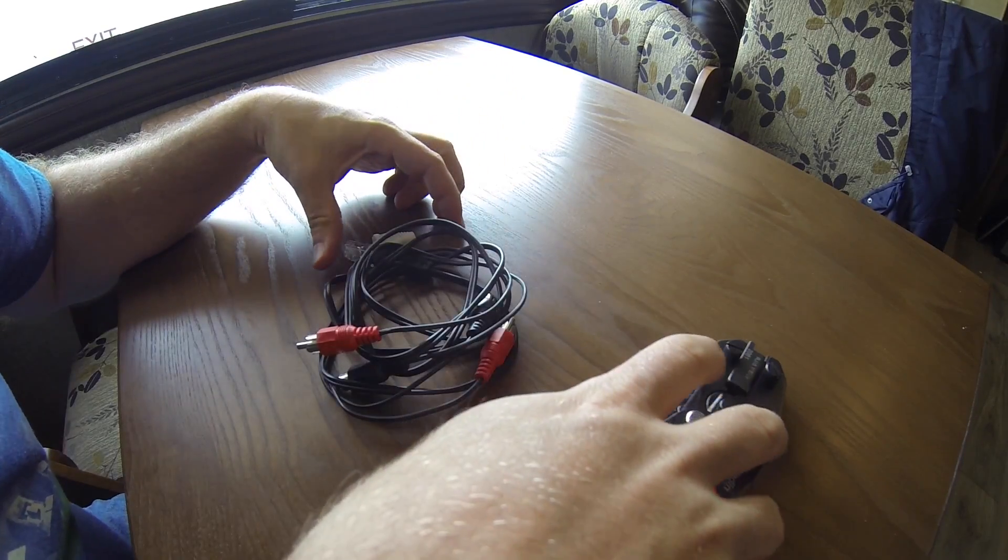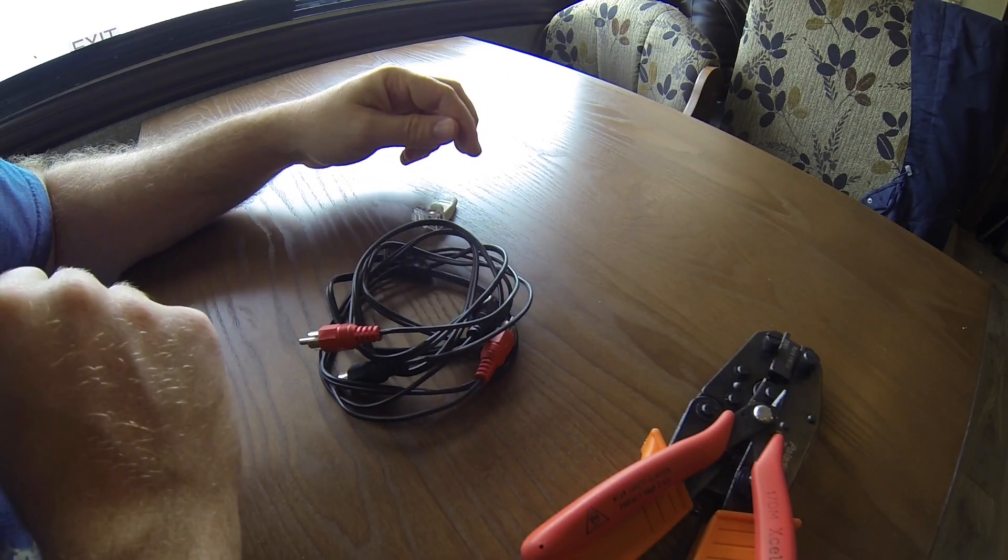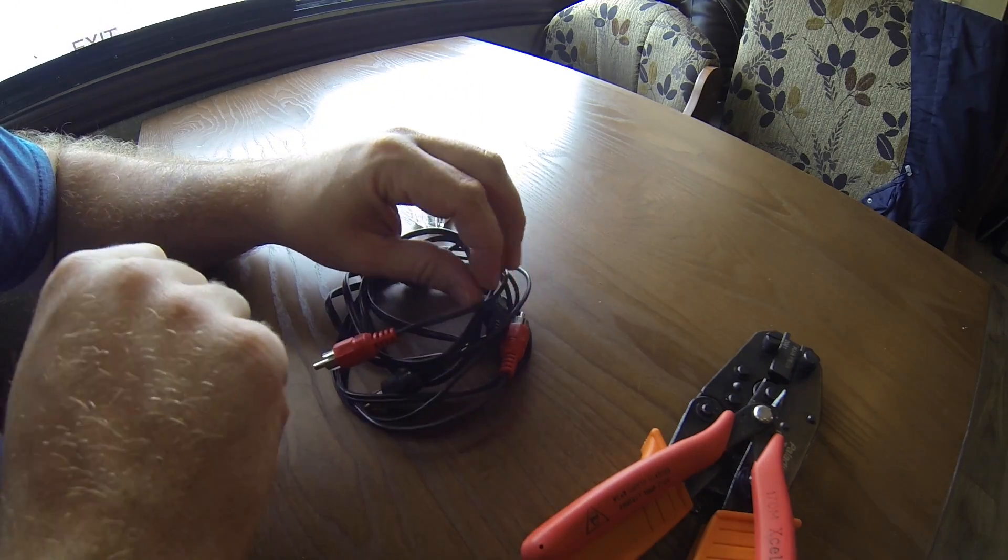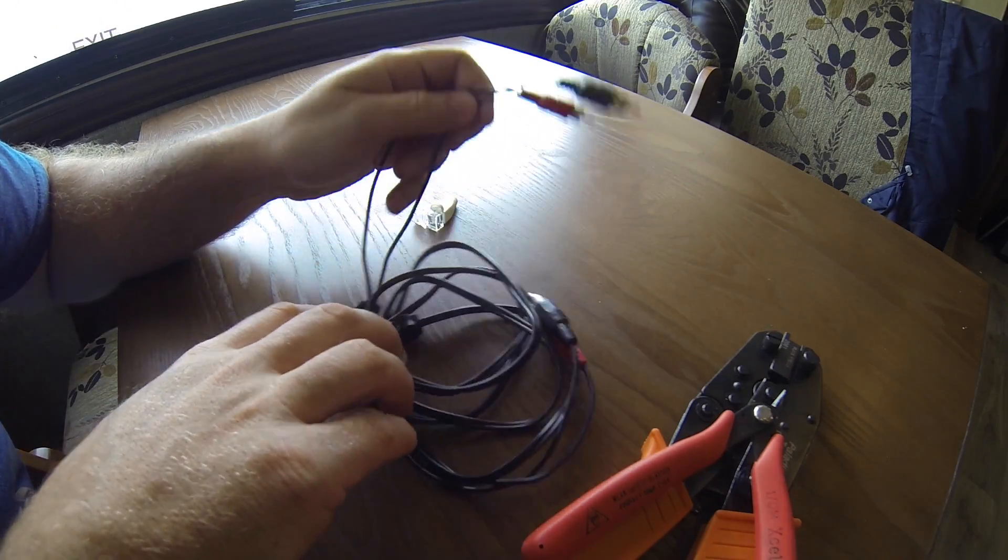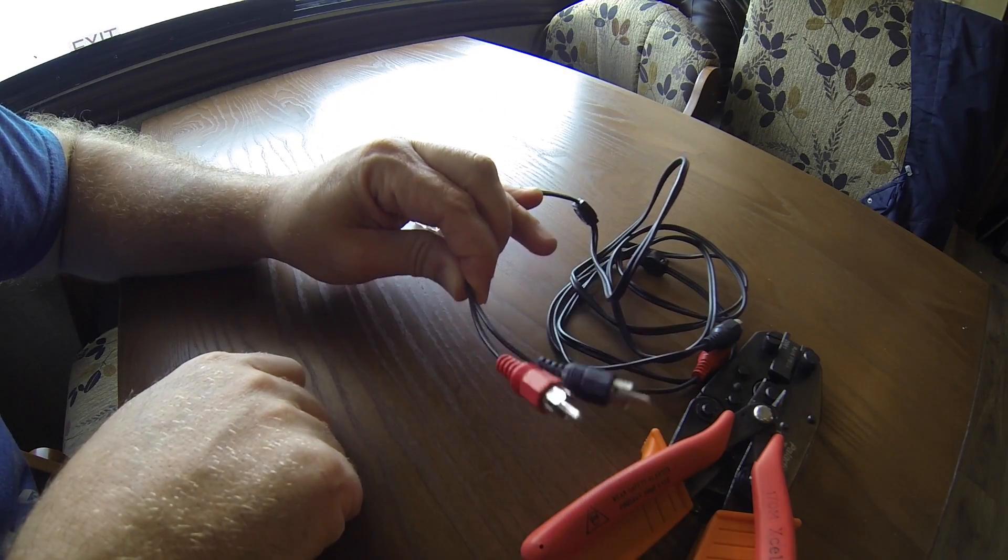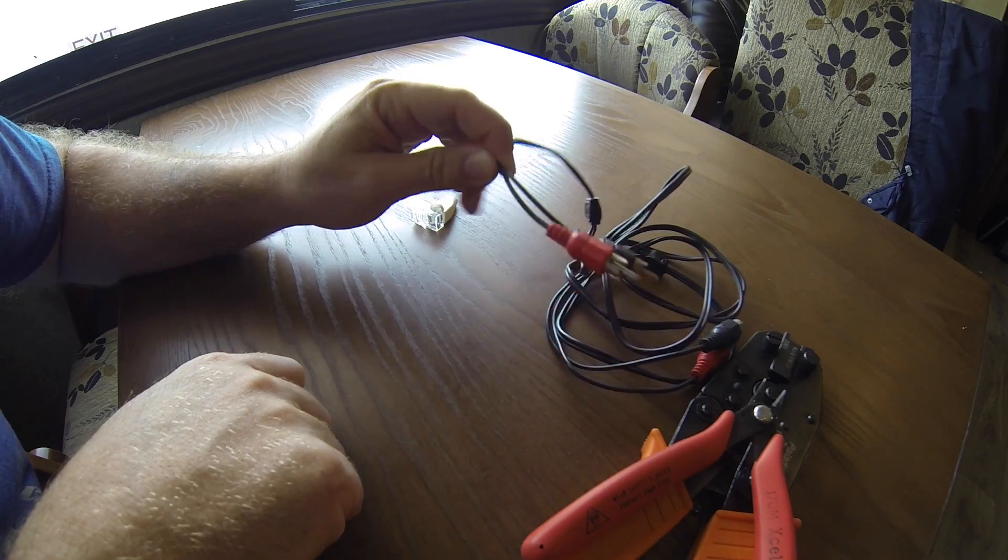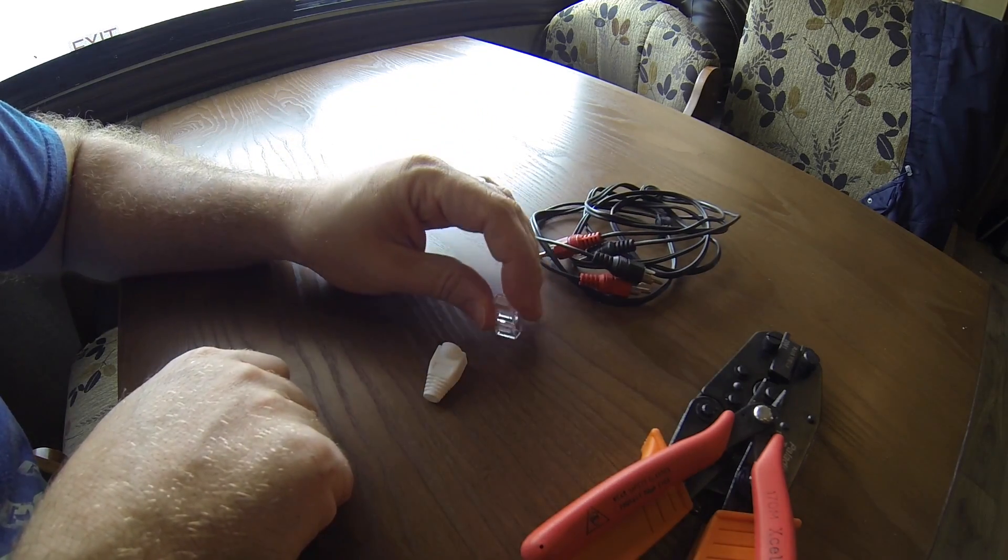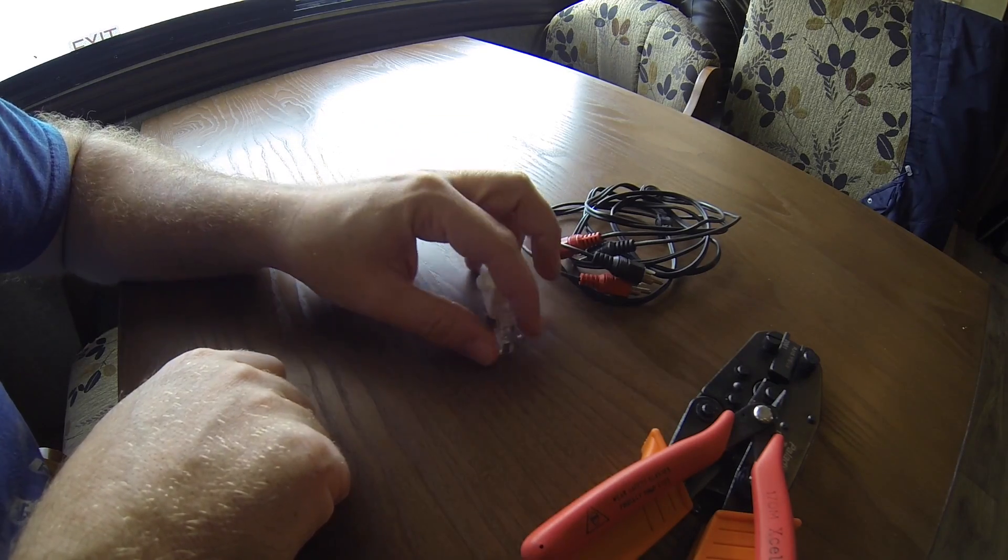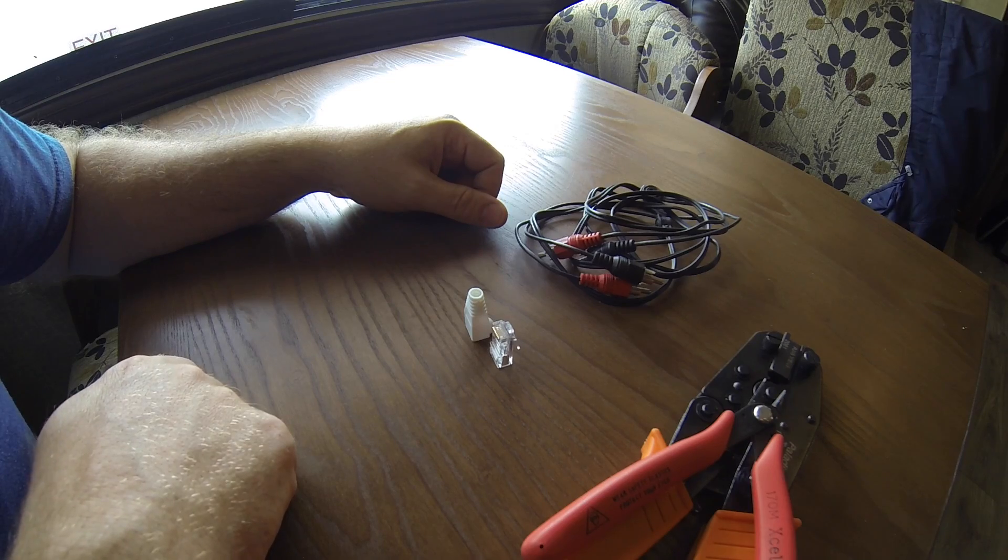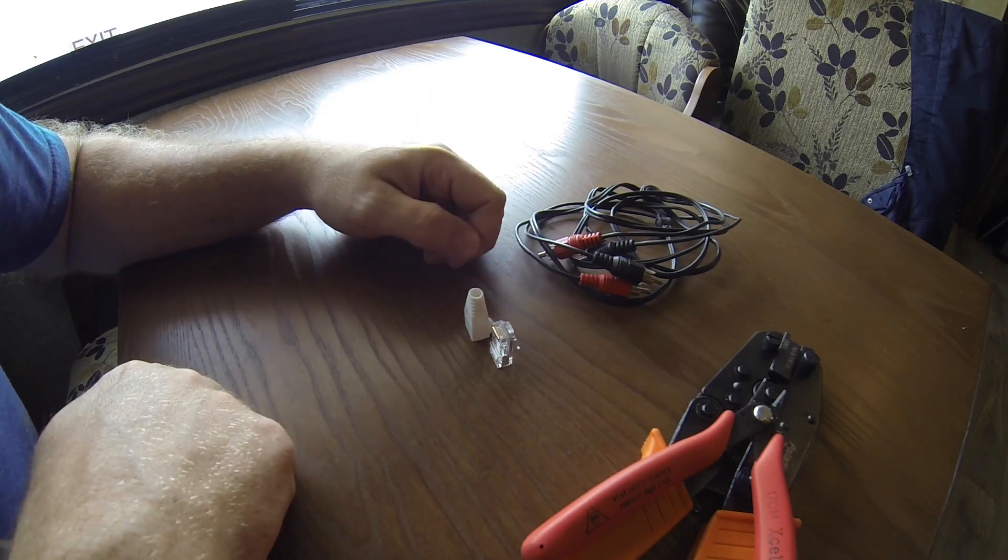All right, today I've got a really simple project. We're going to make an adapter slash extender for unbalanced audio. I'm just going to use the standard RCA style connector and adapt this to run over UTP using a modular plug. You can use whatever UTP you have, but I'm using Cat5e for this. It really doesn't matter.